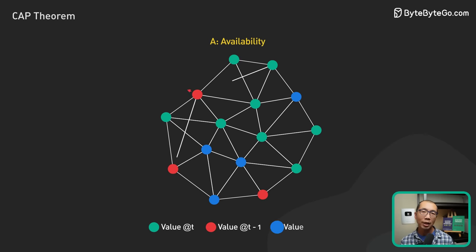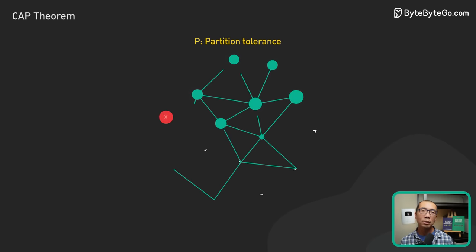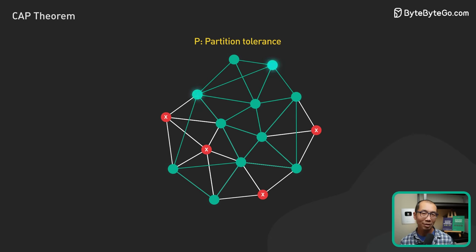Availability refers to the ability of a system to respond to requests from users at all times. Partition tolerance refers to the ability of a system to continue operating even if there is a network partition.